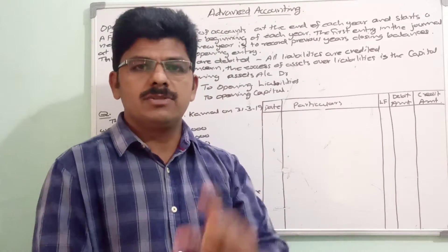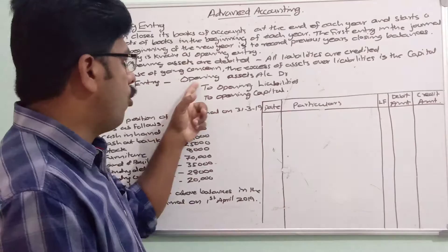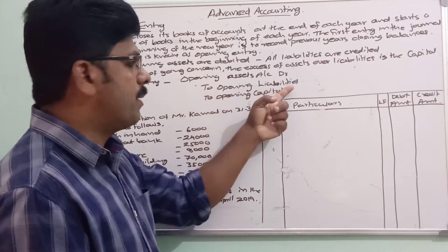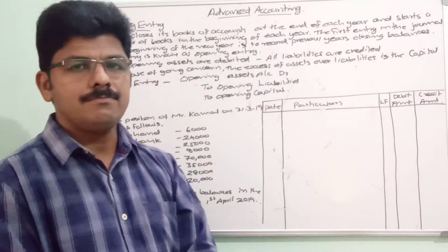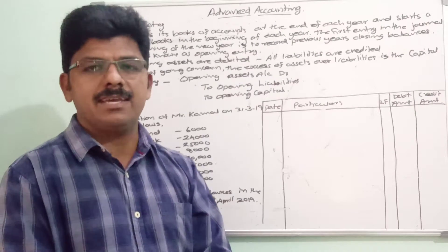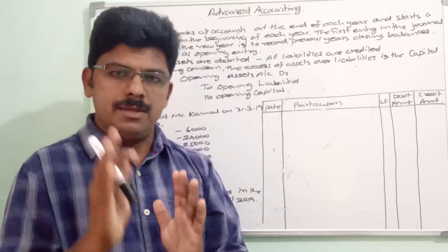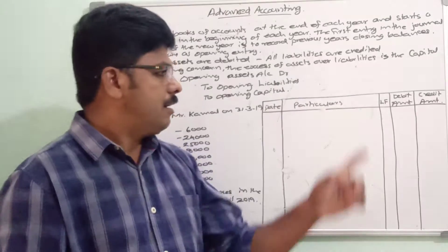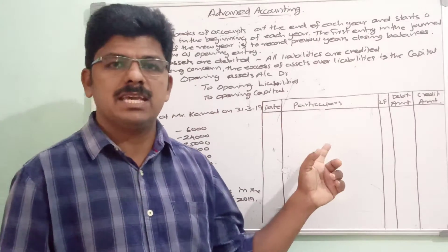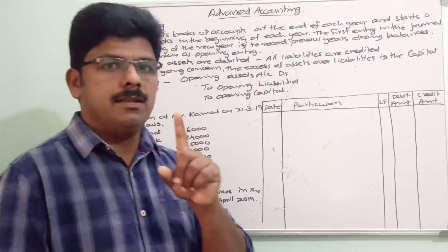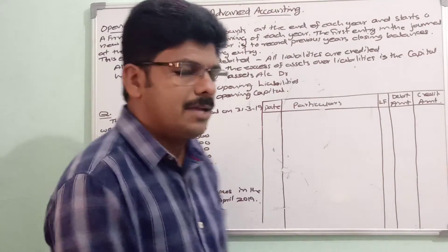So the entry to pass for the opening entry is: opening assets account debited, to opening liabilities, to opening capital. Let us see how this opening entry is passed with the help of one example.